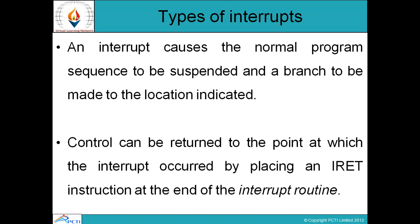Types of interrupts: an interrupt causes the normal program sequence to be suspended and a branch to be made to the location indicated. When the system is interrupted, the normal flow of the program will be suspended and execution will jump to a particular location. Control can be returned to the point at which the interrupt occurred by placing an IRET instruction at the end of the interrupt routine.